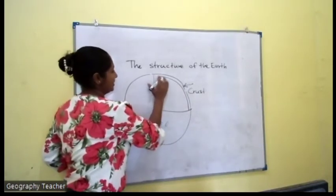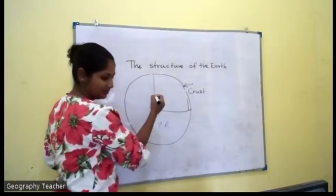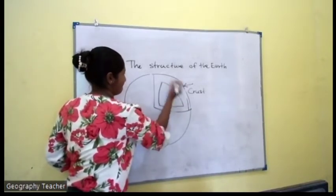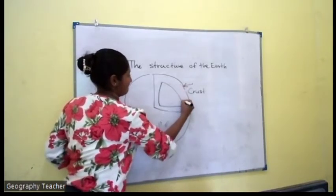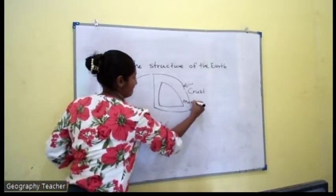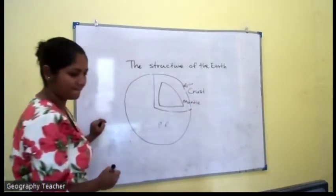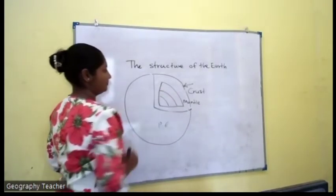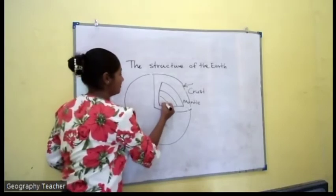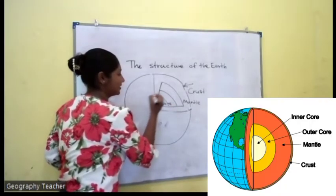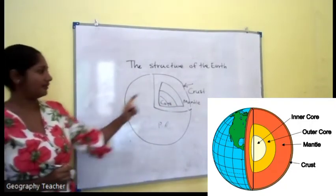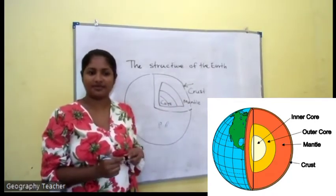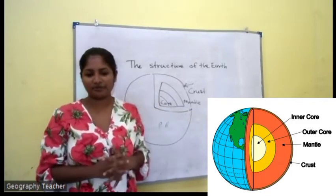The next layer is the mantle. And there is an inner core and an outer core — we can say 'core' commonly. So crust, mantle, and core — these are the three main layers of the structure of the Earth.